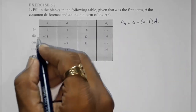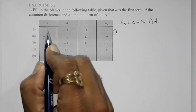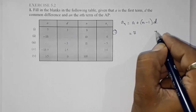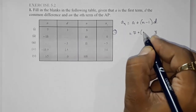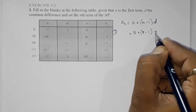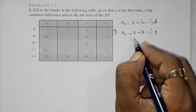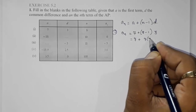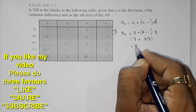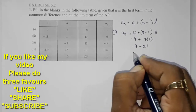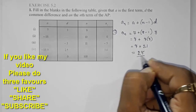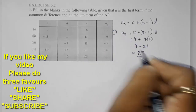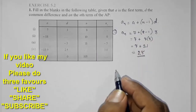Starting with Answer 1: a is 7, so instead of a I am going to write 7. d is 3, n is 8, so 8 minus 1 into 3. We have to subtract 8 minus 1 which is 7, then multiply: 7 into 3 is 21. So 7 plus 21 gives us 28. Your an, or the nth term, will be 28.